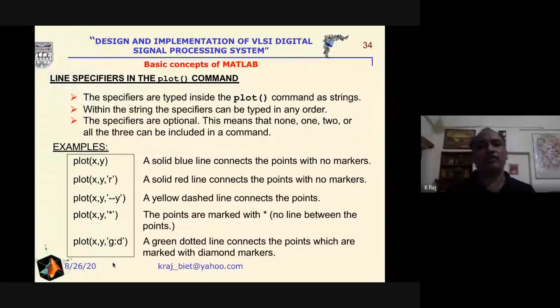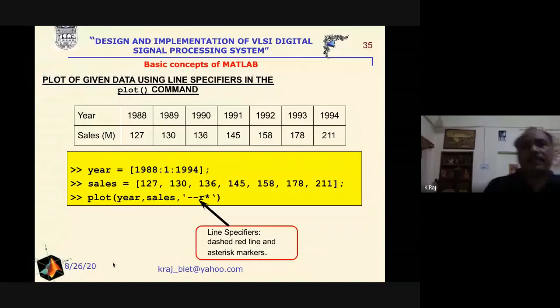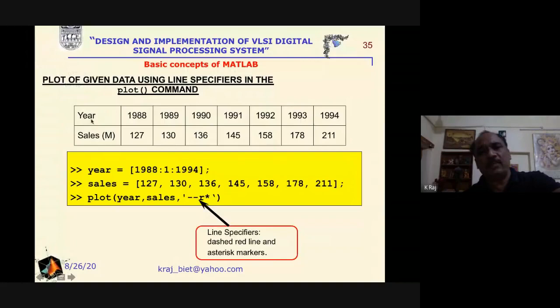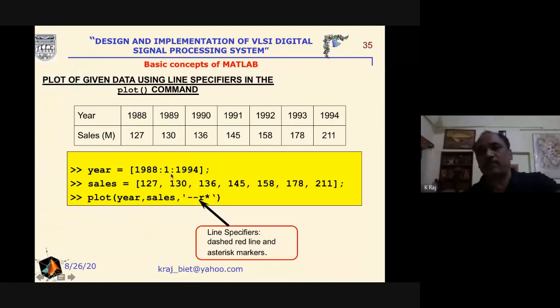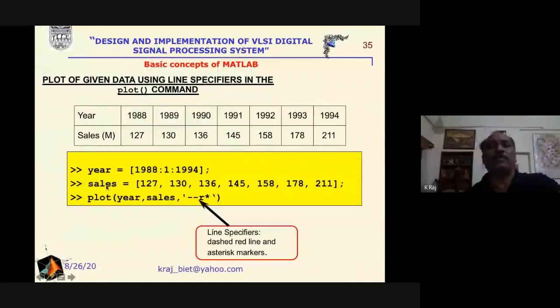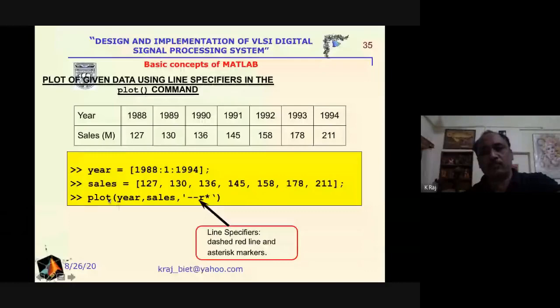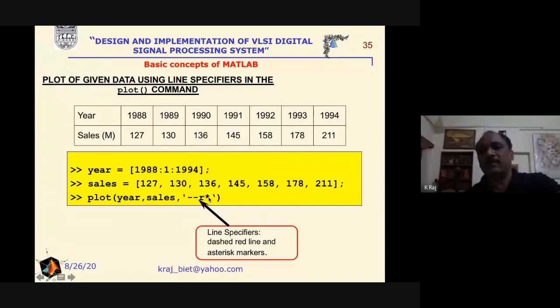As an example with a data table of years (x) and sales (y): define x = 1995:1:2002 and define y as the sales values. Write plot(year, sales, 'r--h') to get a dashed red line with a hexagram marker. The result shows a dashed red line with the h-trace marker, and all this is done in just three lines of commands.